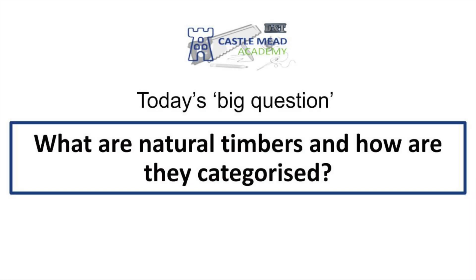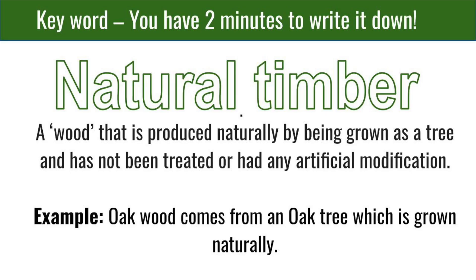Today's big question is: what are natural timbers and how are they categorised? In simple terms, a natural timber is any wood or timber that is produced naturally by being grown as a tree. An example would be oak, as this comes from an oak tree. Natural timbers typically haven't been treated and they haven't been produced by humans, therefore being natural timbers.